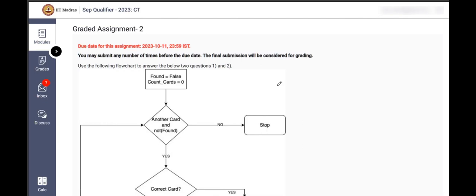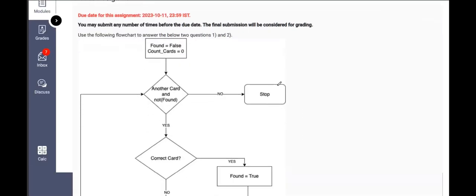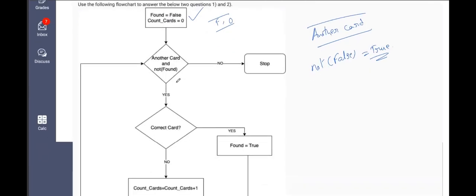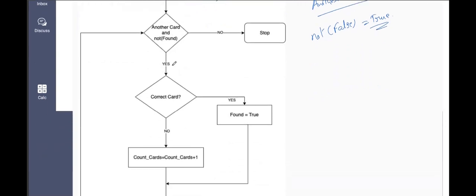So let us start the assignment. This is the first question, which you can see: found = false, count_cards = zero. This is great. And 'another card' - what does this mean? Another card means are there any other cards left in pile one? This is the simple wording which has been used instead of the complete sentence. If you see, found is false and not of false is true. Therefore, this is what the decision box is checking for, and if this is true, then we move on to the next branch.